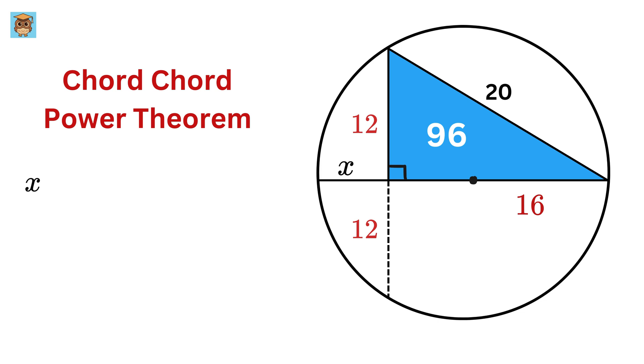Therefore, this length, or x times this piece's length, or 16, equals this piece, or 12 times this length, or 12 again. So, we get x equals 144 over 16, or 9. Excellent!